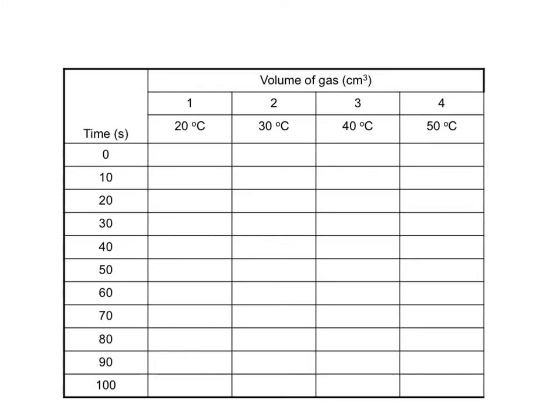You take the results in a table such as this one, starting at 20 degrees, and you would enter the volume of the gas every 10 seconds until the reaction finished. It might go 0, 15, 29, 35, 42, 46, 47, 48, and so on. Then you do it at other temperatures, for example at 30 degrees, we might get results like 0, then 20, then 39, and 46, and then 50. You do this at a 10 degree difference each time.